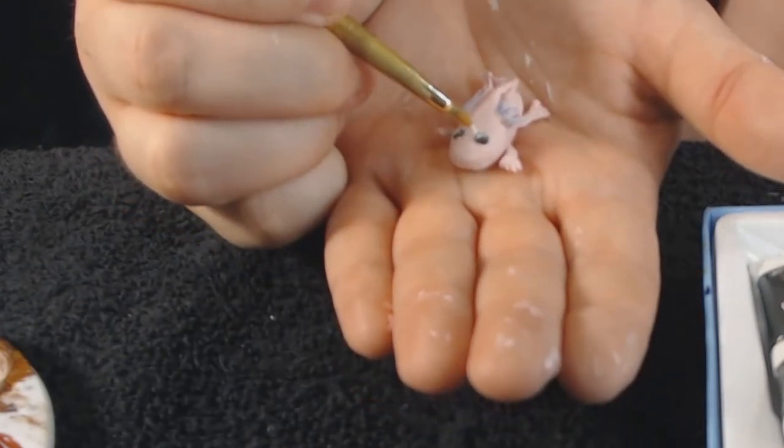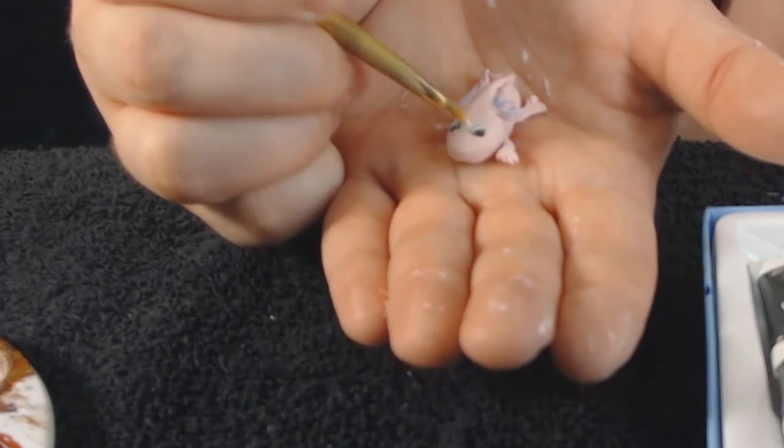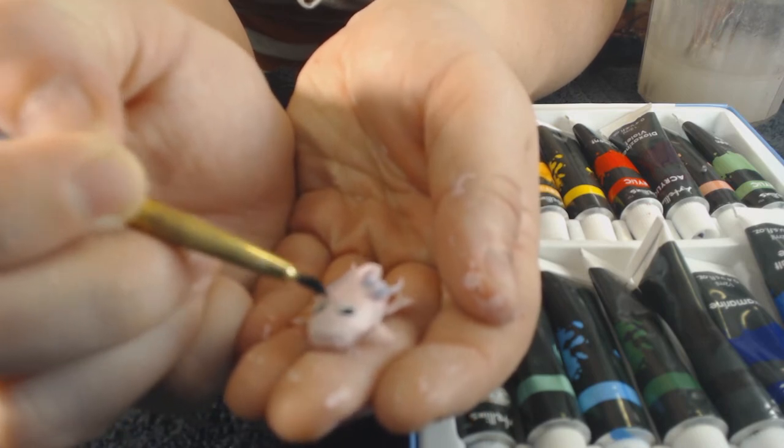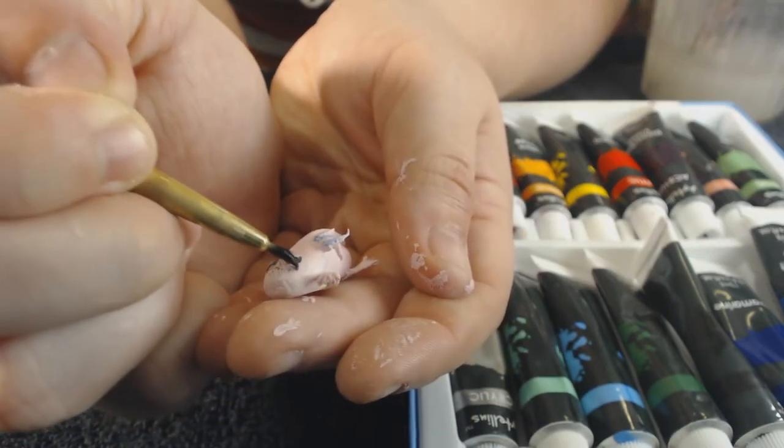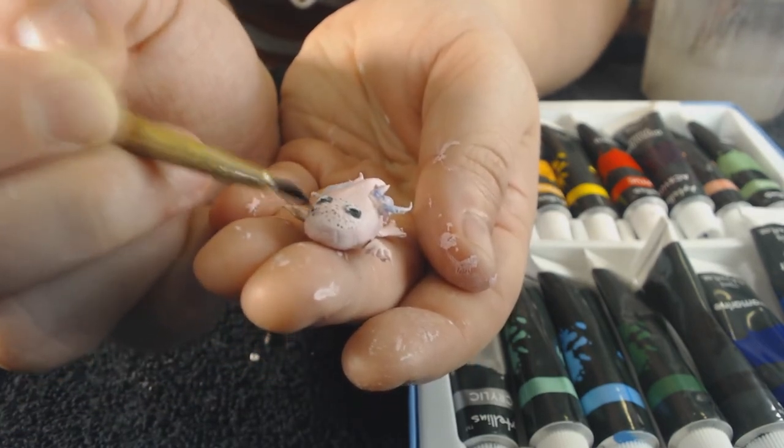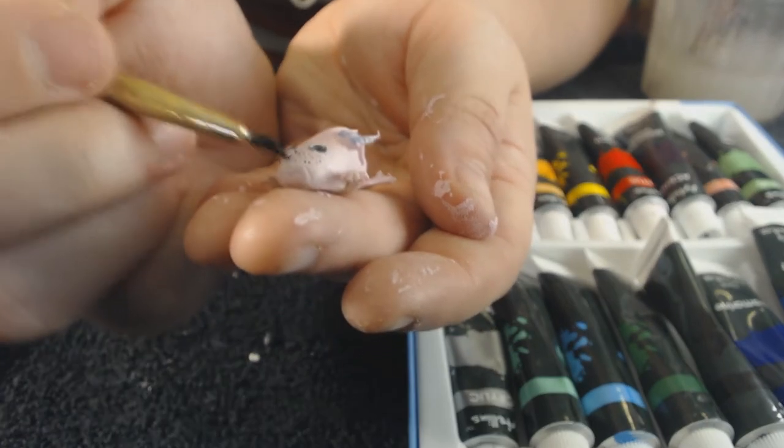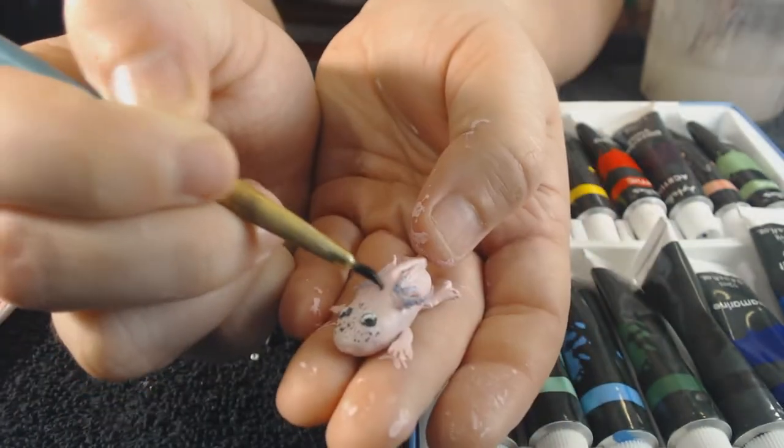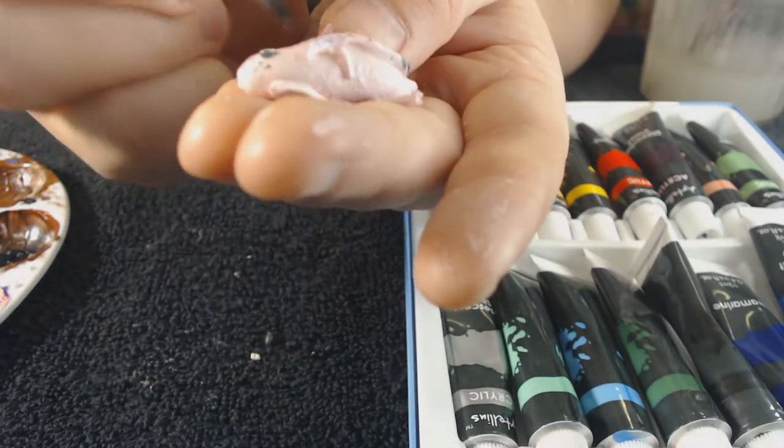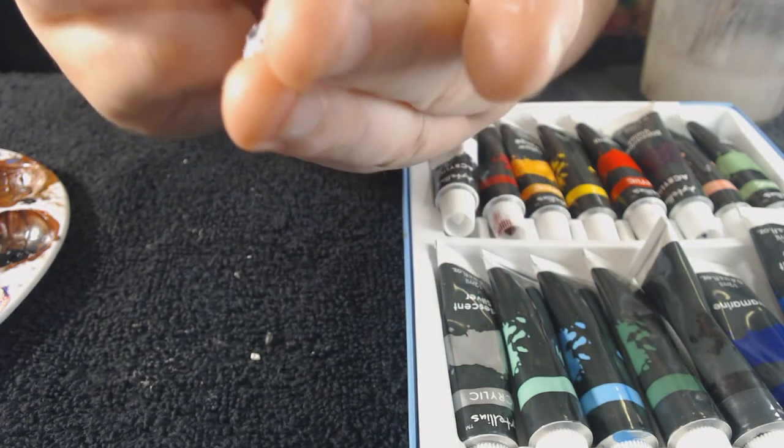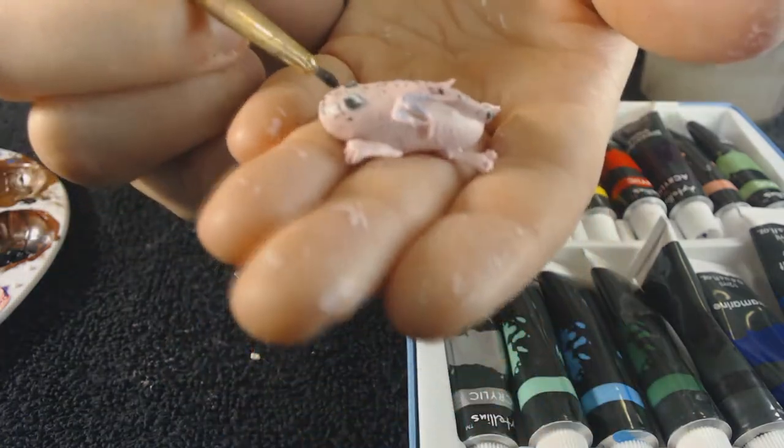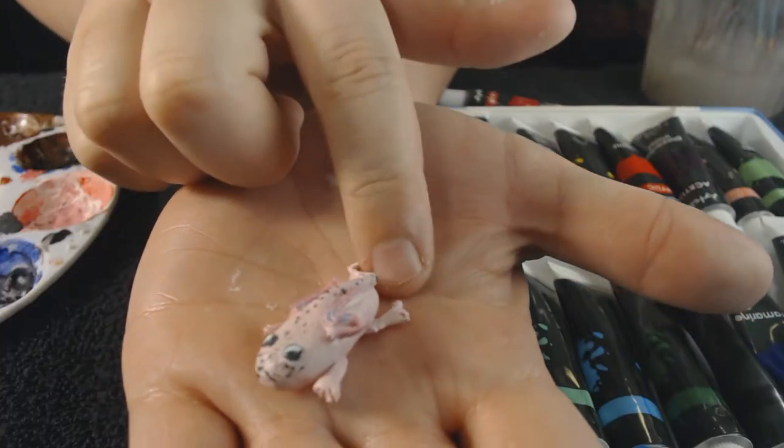I also found that if you just take a marker like a sharpie marker, it'll have the same effect and you can just use that to do the dots if that's easier for you. I know not everyone has like a tiny little paintbrush like that. And there's the cutie pie right there, I think I did a pretty decent job.